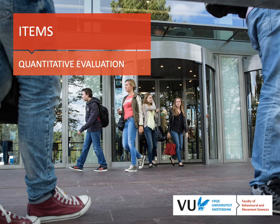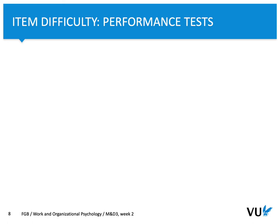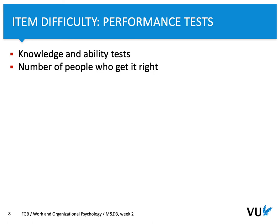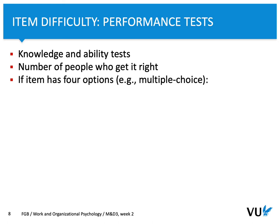Now let's focus on quantitative evaluation. First of all, when we assess the quality of a performance test or capacity test, we assess difficulty. It's applicable to knowledge and ability tests. Overall, the difficulty level informs us about the number of people who get a specific item right. Let's consider a multiple-choice item with four options. Based on the formula, optimal difficulty is 0.625, let's say around 63%.